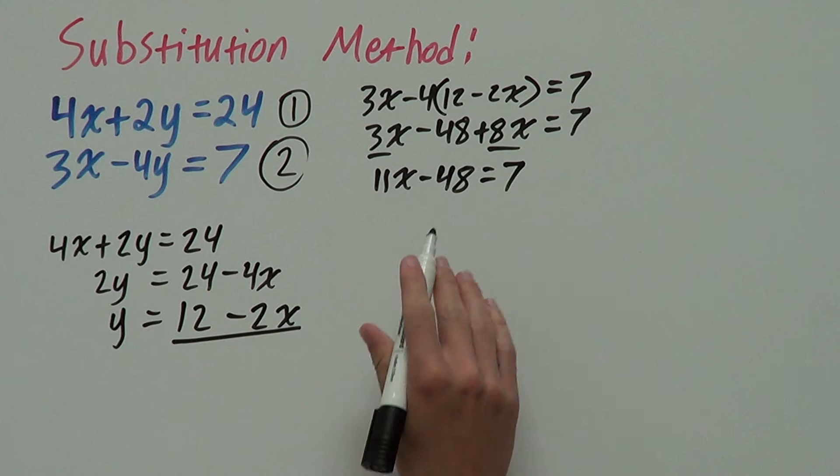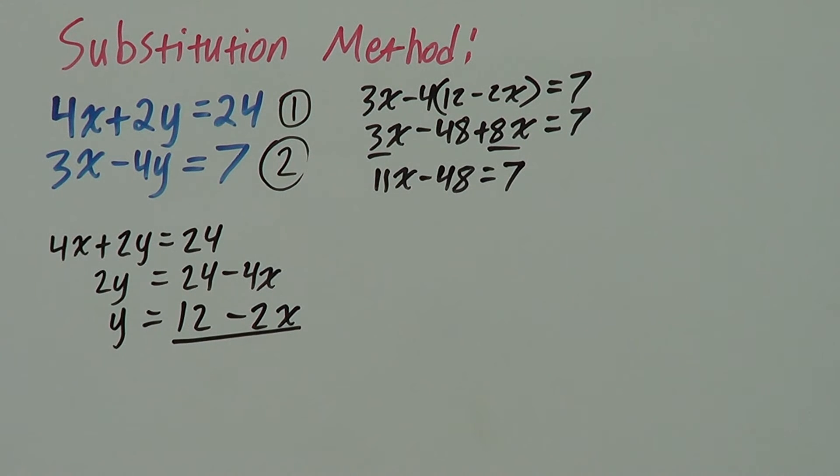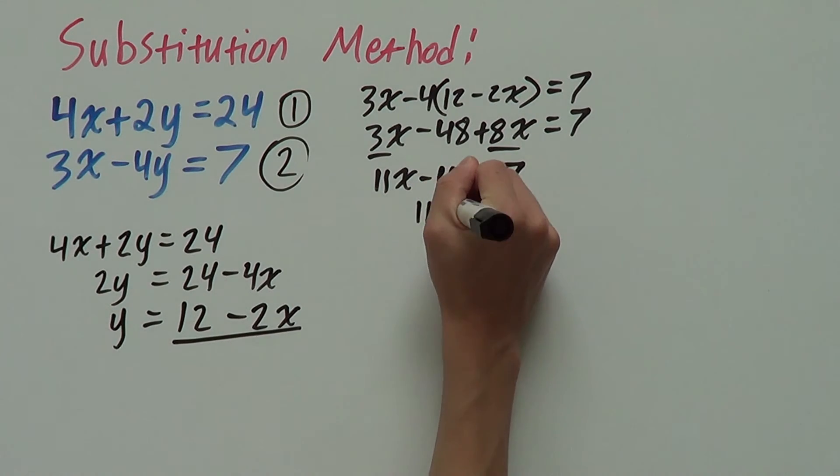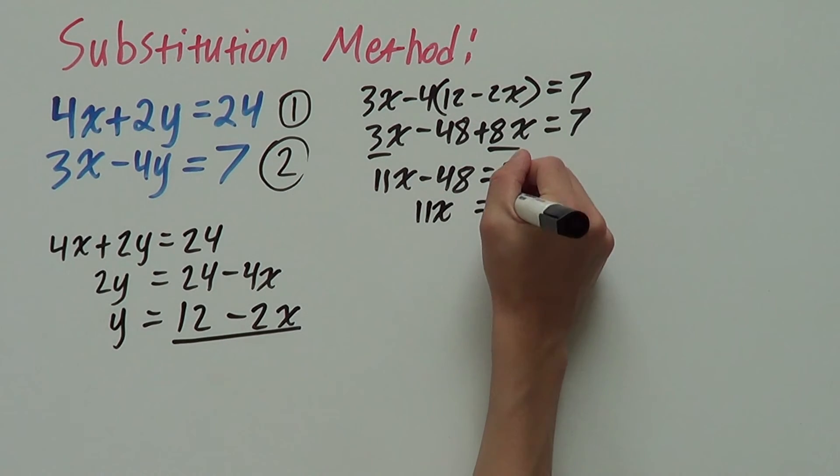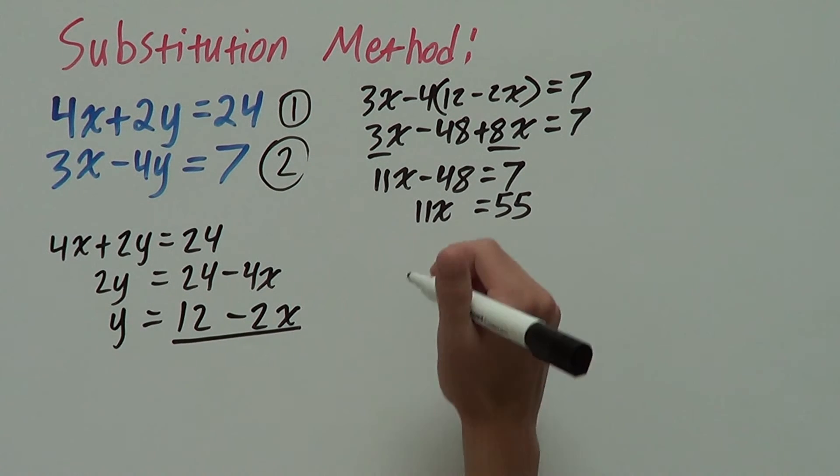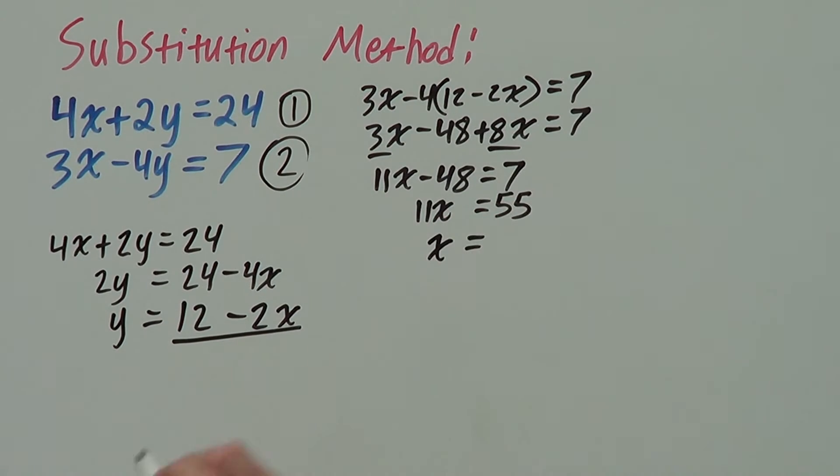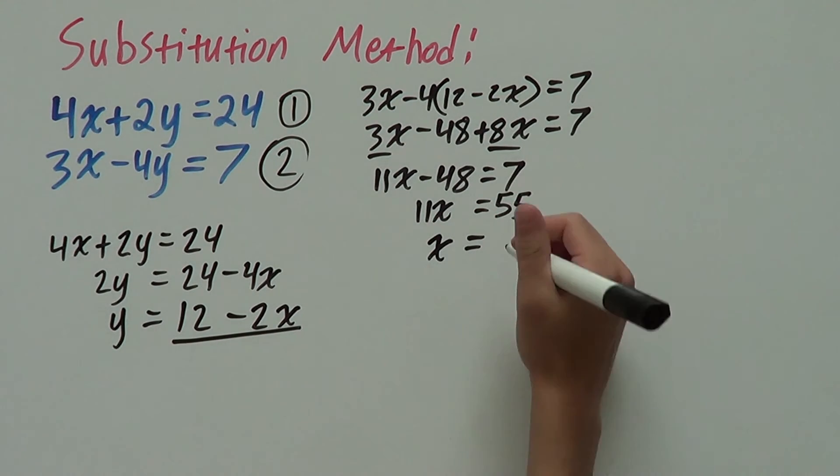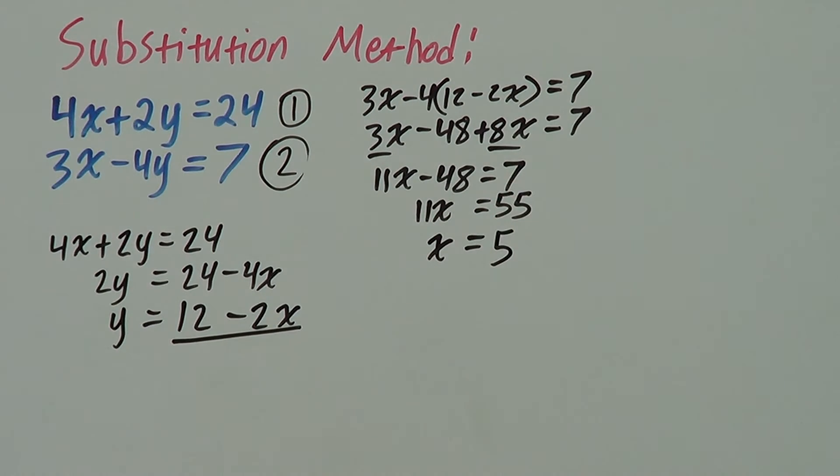We want x by itself so let's get rid of this negative 48 by adding 48 to both sides giving us 11x equals 55 because 48 plus 7 is 55 and now to get x all by itself we divide both sides by 11. 55 divided by 11 is 5. So, x equals 5. So, we have our x value and now we need our y value and then we're done.